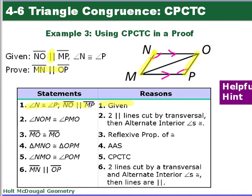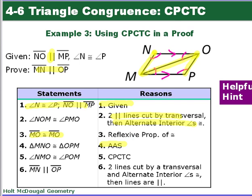Because NO is parallel to MP, angle NOM is congruent to angle PMO — those are alternate interior angles. MO is congruent to MO by the reflexive property. So we have two angles and a side congruent, meaning the triangles are congruent by Angle-Angle-Side. Therefore angle NMO is congruent to angle POM. These are alternate interior angles for lines MN and OP, so by the Converse of the Alternate Interior Angles Theorem, MN is parallel to OP.